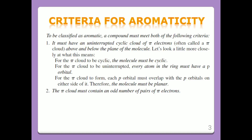Criteria for Aromaticity. To be classified as aromatic, a compound must meet both of the following criteria. Criteria 1: It must have an uninterrupted cyclic cloud of pi electrons above and below the plane of the molecule. For the pi-electron cloud to be cyclic, the molecule must be cyclic. For the pi cloud to be uninterrupted, every atom in the ring must have a p-orbital. For the pi cloud to be formed, each p-orbital must overlap with the p-orbitals on either side of it. Therefore, the molecule must be planar.